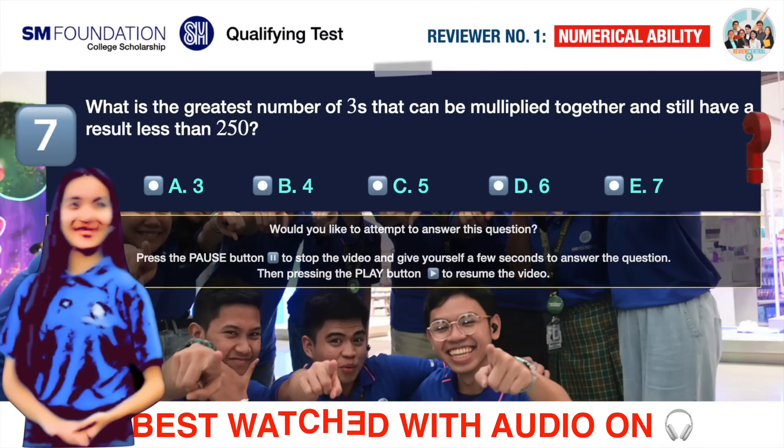Question number 7. What is the greatest number of 3's that can be multiplied together and still have a result less than 250? A 3, B 4, C 5, D 6, E 7.